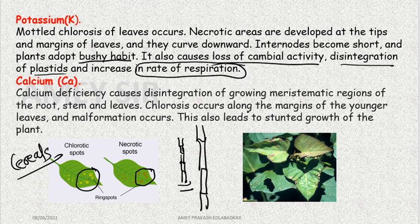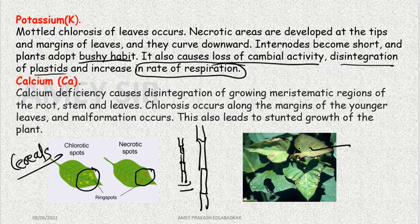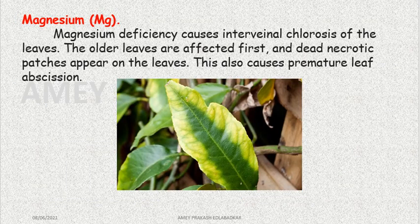Calcium deficiency also deactivates the meristematic region and degrades it. Chlorosis occurs in leaves; infections are seen on the margins and spread over the whole leaf. All these things lead to stunted growth in cases of calcium deficiency.